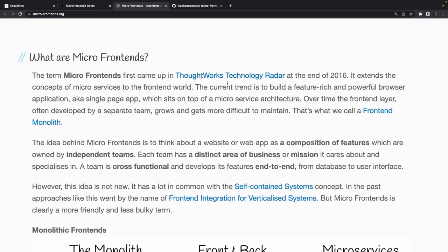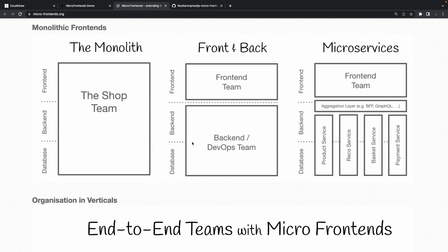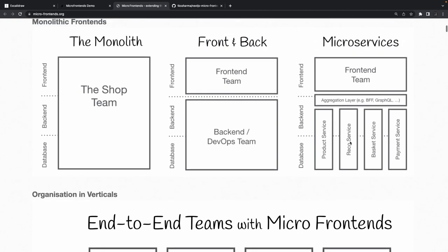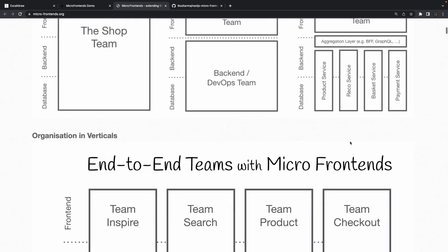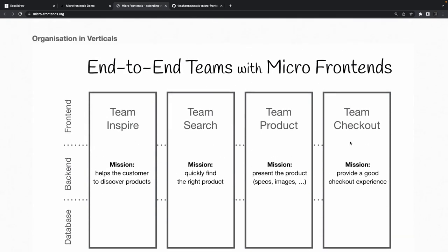This is a blog from ThoughtWorks - it's a nice blog and I'll add the link in the description. It shows how we were doing things in the 2000s, then we started talking about two-tier architecture with separate front-end and back-end teams. Then there's front-end team aggregation with backend-for-frontend or GraphQL, DevOps teams, database teams, and multiple microservices. The microservices evolved and we started splitting services into multiple services with respective teams assigned to them. Then it's about verticals - a product with five different teams managing front-end, back-end, and database pieces.